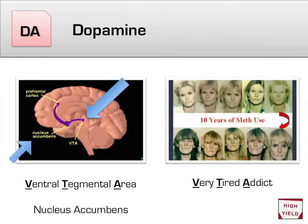A high-yield fact about dopamine is that it is involved in the reward pathway. This reward pathway is located in the ventral tegmental area, or VTA. You can remember the VTA by thinking of the phrase 'very tired addict,' to remind you that this pathway is overexerted in addicts. Within this pathway, the most important area is the nucleus accumbens.